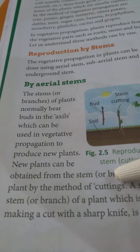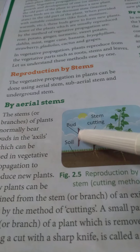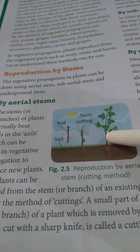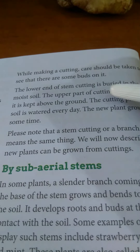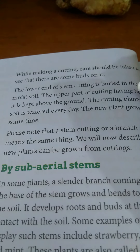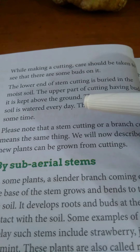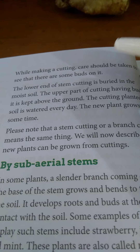By aerial stems — buds are present on the stem, so if you take a stem cutting and bury that cutting in moist soil, that stem cutting can grow into a new plant. This is how a new plant can be grown by the aerial stem method.